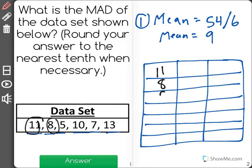11, 8, 5, 10, 7, and 13. Now I've left an extra row at the bottom on purpose.